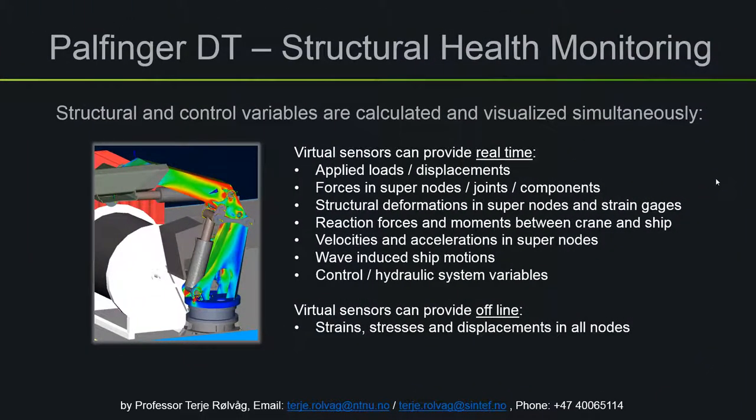So what is the purpose of the digital twin? The digital twin in this example complements the data you get from physical sensors. The simulation can run in real time and you can output applied loads, displacements, forces in joints and components, structural deformations, and outputs from strain gauges. We can plot reaction forces and moments between the crane and ship, and plot velocities and accelerations at every point or super node on the crane.